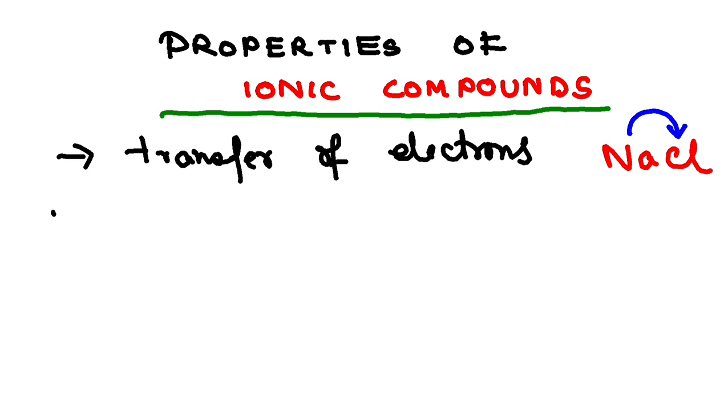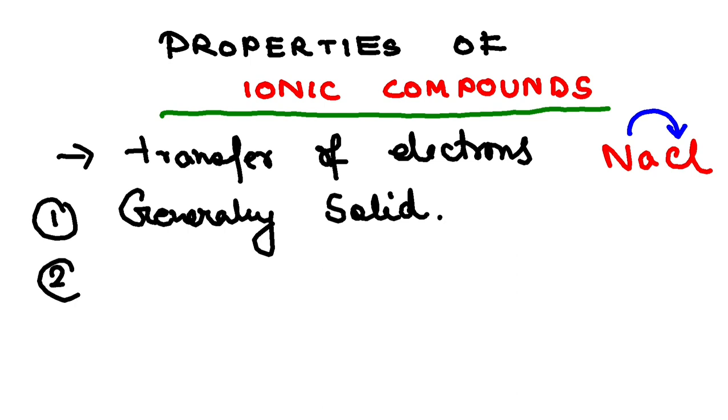The first property is that ionic compounds are generally solid. This is self-explanatory, no need to explain it further. Number two, ionic compounds are actually hard.